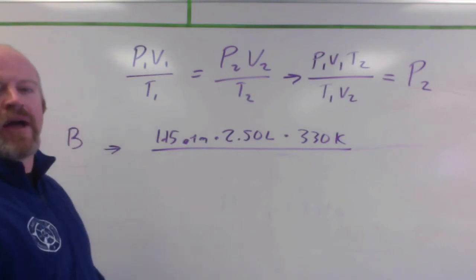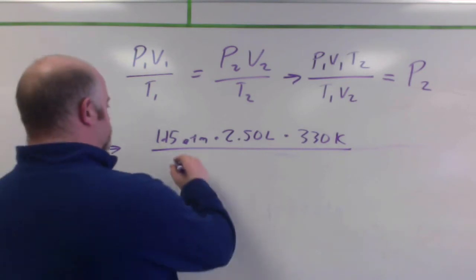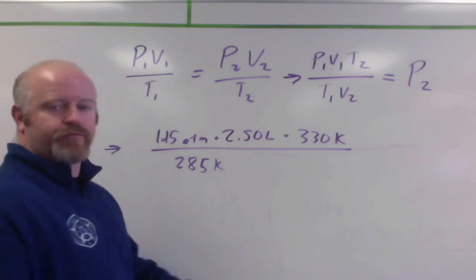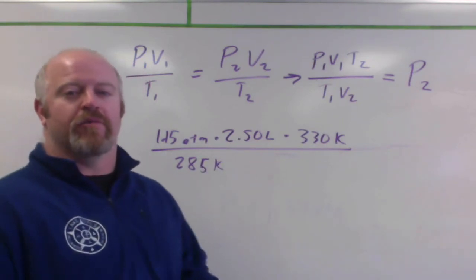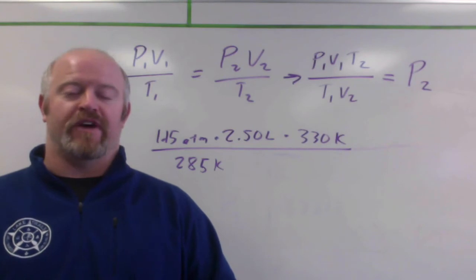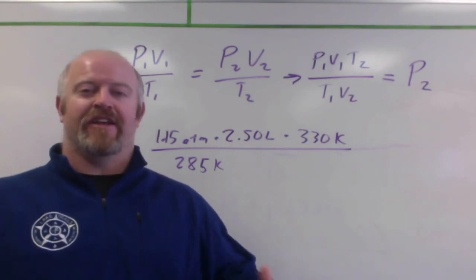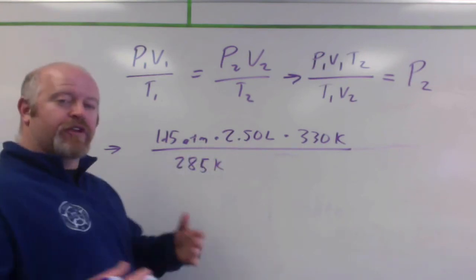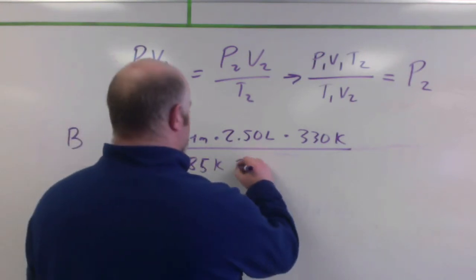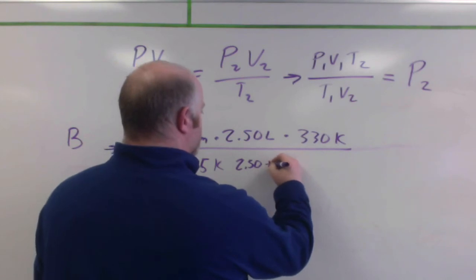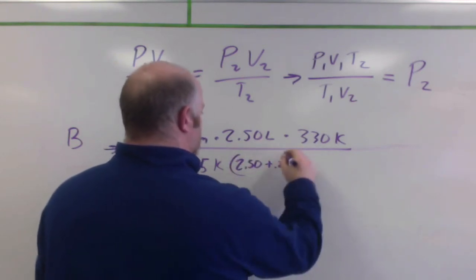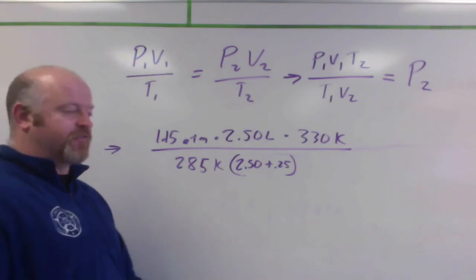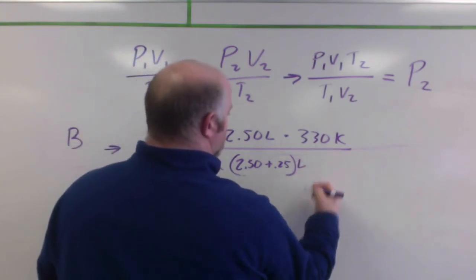All of that divided by my starting temperature, which is 285 Kelvin times my second volume. Now in the problem, it says 0.25 liters, but that's how much it can increase by. So if 2.50 was the initial, it can increase by 0.25, that's 2.50 plus 0.25. So added together is the overall ending volume there in liters.